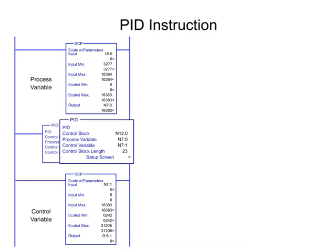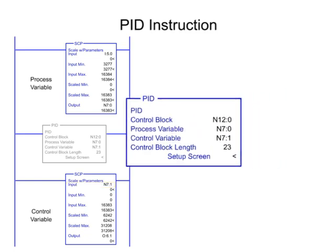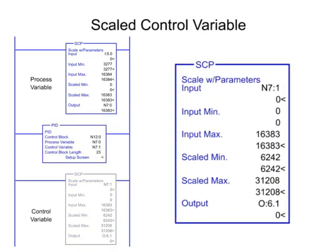In the PID instruction, the process variable parameter is programmed as an integer file, which is the scaled value from the SCP instruction. The control variable parameter is programmed as an integer, which is the memory address for the output value. Next, the control variable range of 0 to 16,383 is scaled to an analog output module using the second Scale with Parameters instruction.